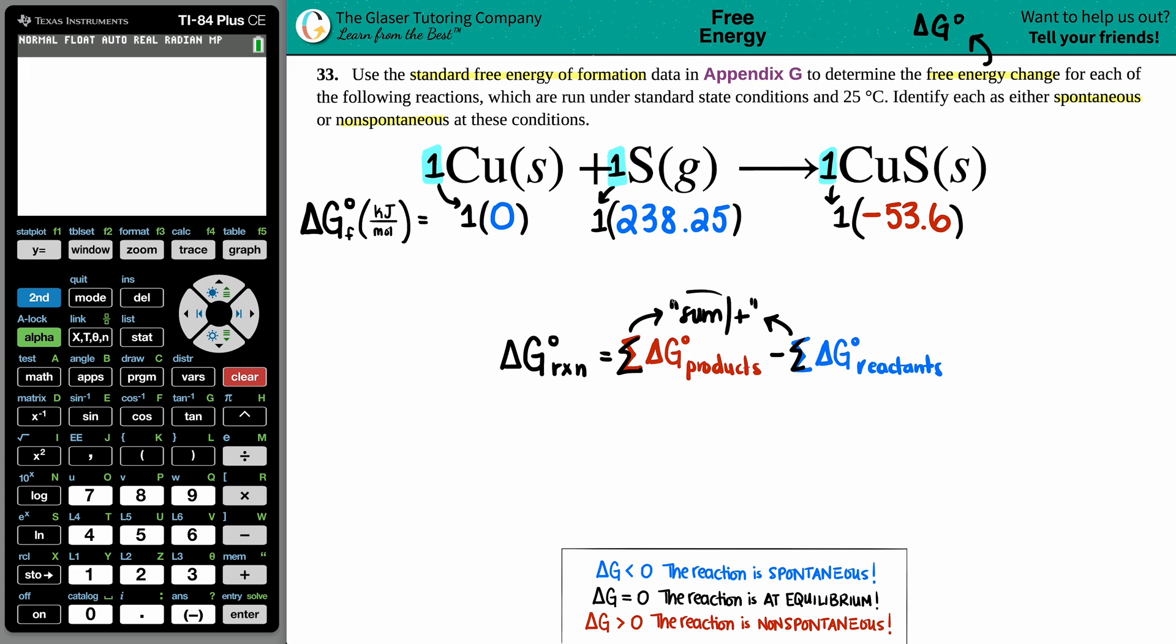Now we just have to sum it up, right? Literally on the reactant side, it's copper plus sulfur, so it's this number plus this number. We know what this number is—zero plus anything is that number. So we get an ending of 238.25. And then for the copper sulfide, the product side, one times negative 53.6. Well, that's negative 53.6. Now I'm ready to plug these values into my equation.